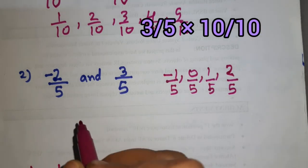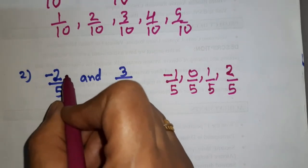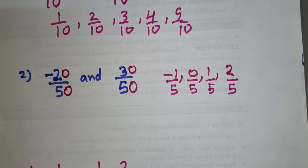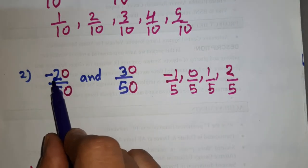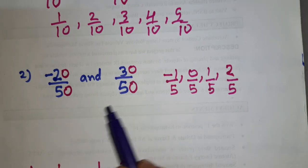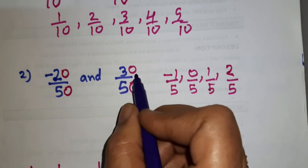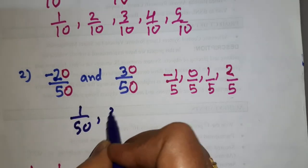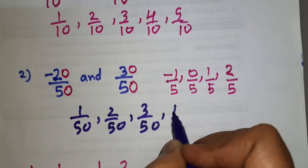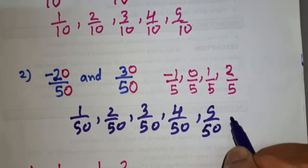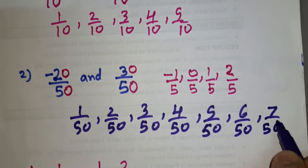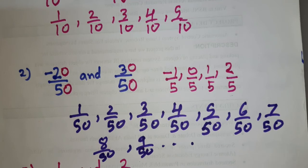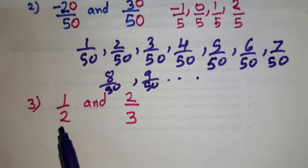If we want to find more rational numbers — say 10 rational numbers — we multiply by 10, giving minus 20 upon 50 and 30 upon 50. Now looking at the integers between minus 20 and 30 with denominator 50, we can write positive ones: 1 upon 50, 2 upon 50, 3 upon 50, 4 upon 50, 5 upon 50, 6 upon 50, 7 upon 50, 8 upon 50, 9 upon 50, and so on.